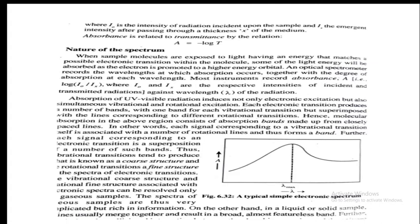Absorption of UV-visible radiation induces not only electronic excitation but also simultaneous vibrational and rotational excitations. Electronic excitation occurs from the ground state to an excited state. UV-visible spectroscopy thus involves electronic levels along with vibrational and rotational levels, which we have already studied separately.